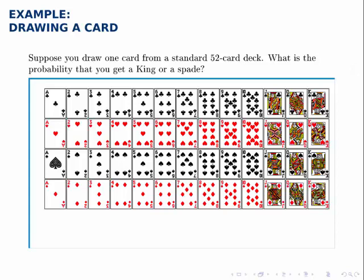Suppose you draw one card from a standard 52 card deck, what is the probability that you get a king or a spade? So the kings are all right here and the spades are all right here.